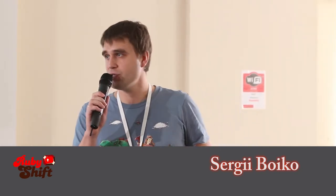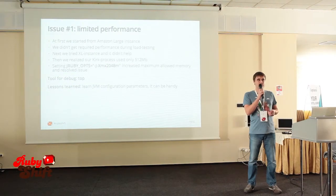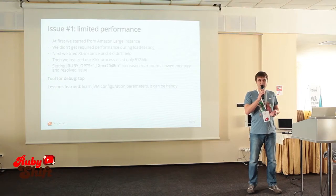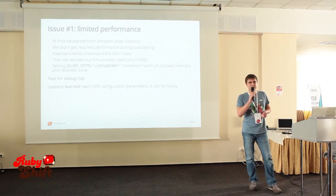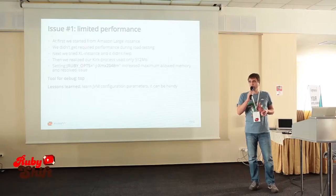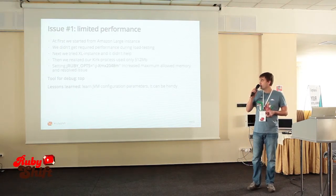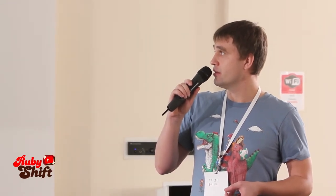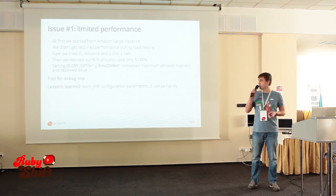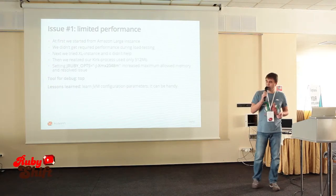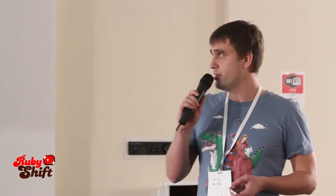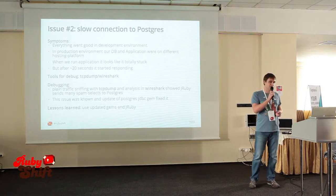The first issue we met in production was limited performance. We started to benchmark our application before putting it in a real environment and we hit some limit in throughput. We updated to an extra-large instance — it didn't help. Then we observed that our JRuby process was using too little memory, about 500 megabytes. We googled a lot and found this option: you can set different Java options and XMX is the maximum level of memory allowed to be used by the process. After setting this, JRuby obtained the required memory amount and we got the required throughput. Don't hesitate to read JVM documentation because it contains many useful configuration options.